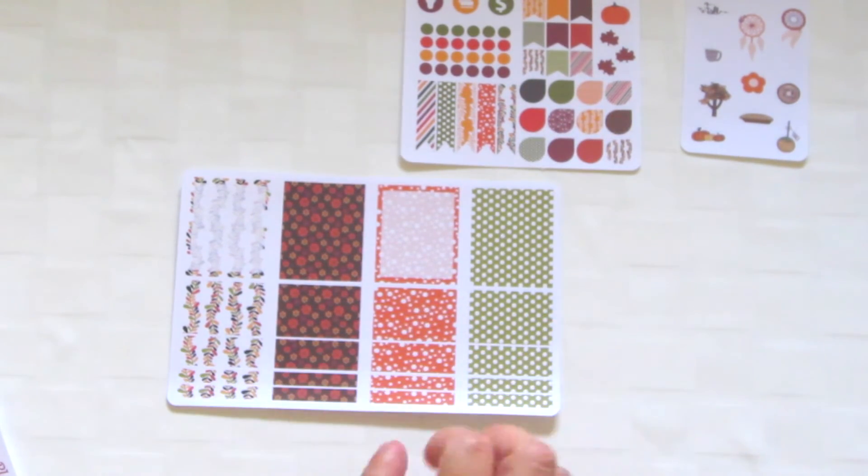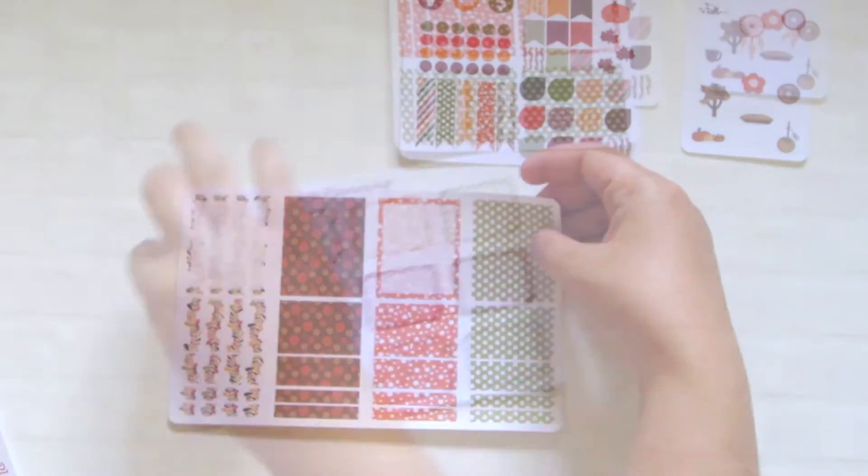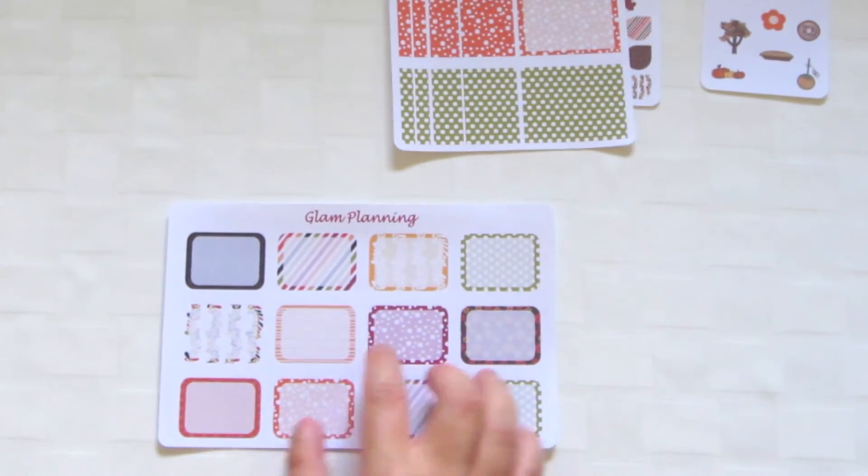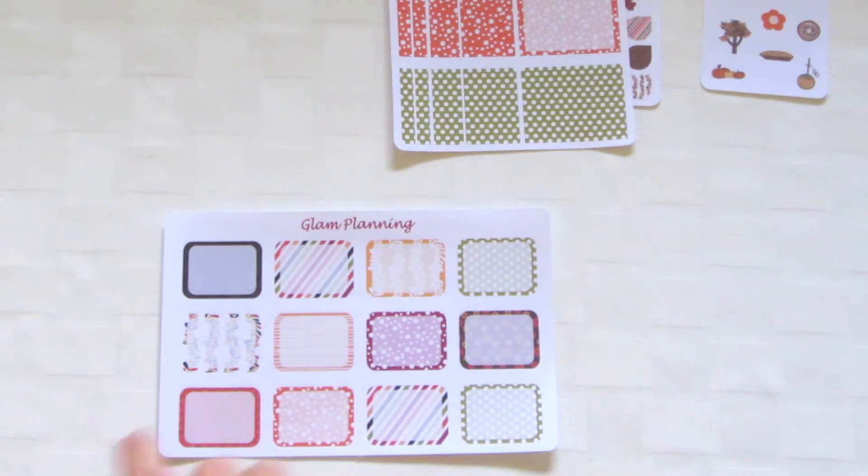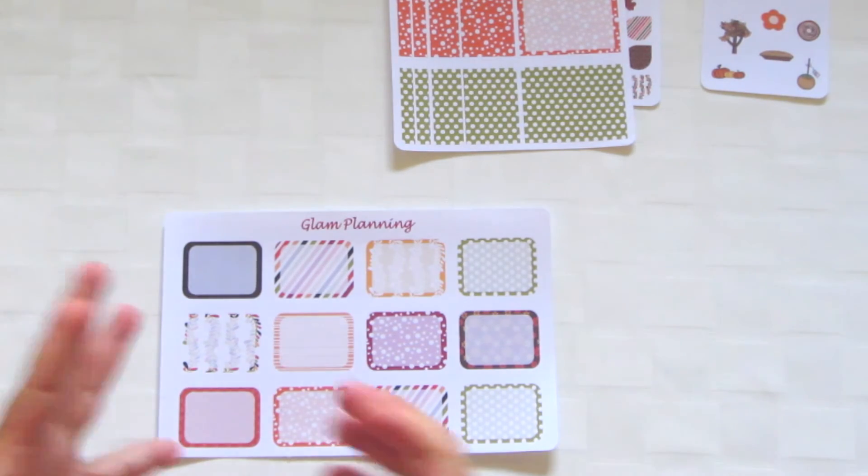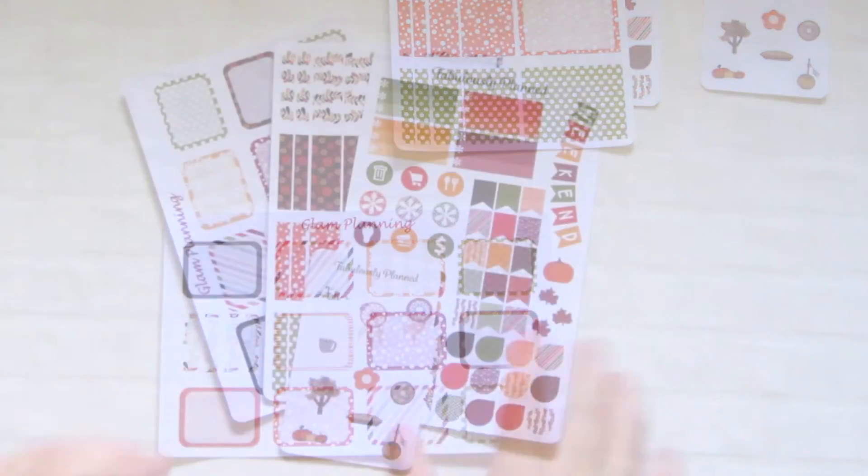I also got some of these half boxes. As you know, I really love half boxes. I think they're really cool to use and they're a great way to give a pop of color to your planner without it becoming overwhelming, while still being able to use them functionally.